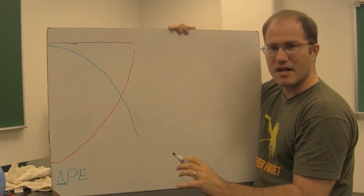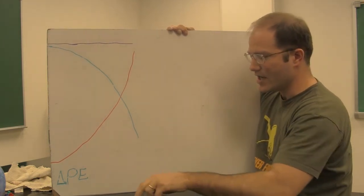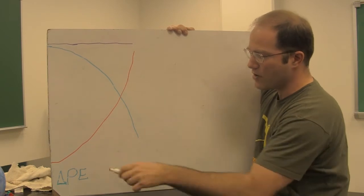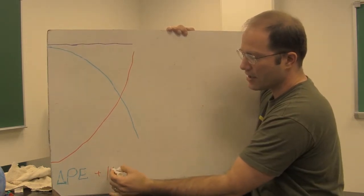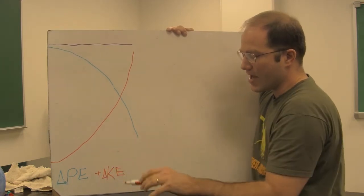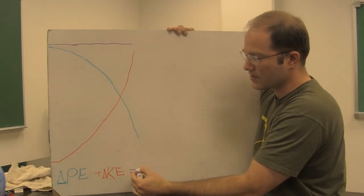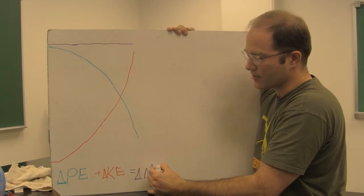But now something happens that I want to look at when the ball hits the ground. Something very strange. You see, as the ball hits the ground, well, we have a change of potential. Let me add to that a change in kinetic, delta KE. And that is equal to our sum of those two, which is a change, delta ME, change in mechanical energy.